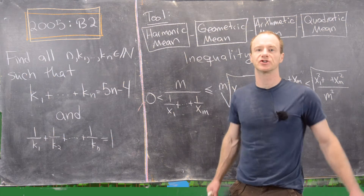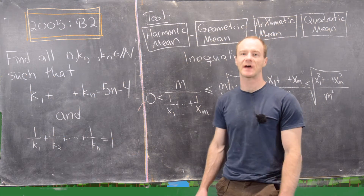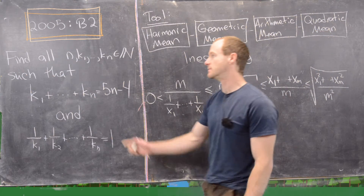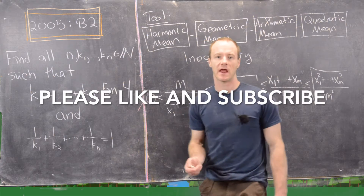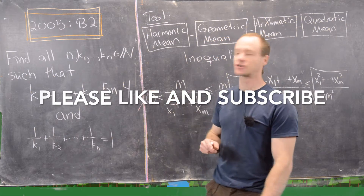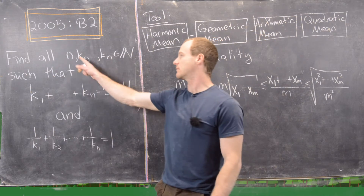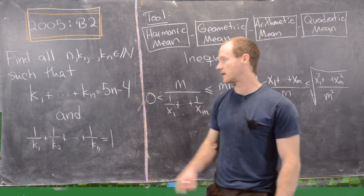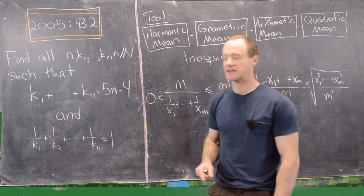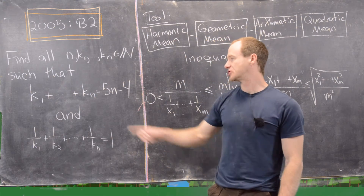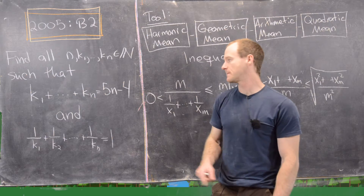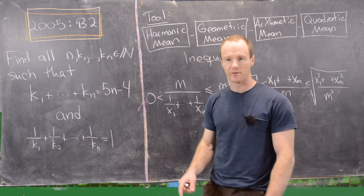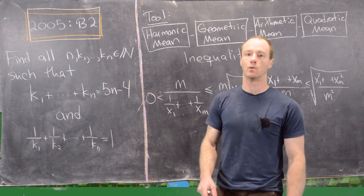In this video we're going to look at a solution to problem B2 from the 2005 Putnam exam. Let's find all n, k₁ through kₙ which are natural numbers — so we've got n+1 natural numbers — such that these two equations are satisfied: k₁ + k₂ + ... + kₙ = 5n − 4, and 1/k₁ + 1/k₂ + ... + 1/kₙ = 1.